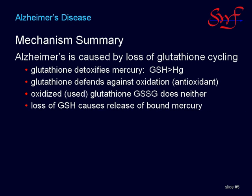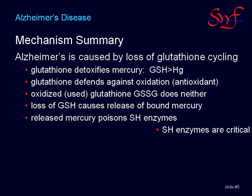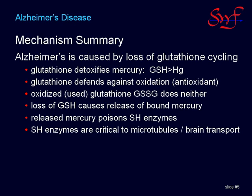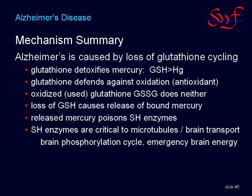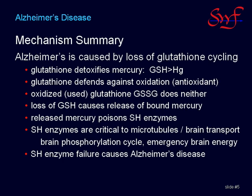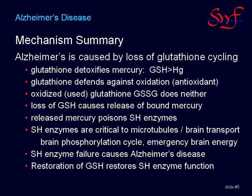Oxidation of glutathione causes release of bound mercury. Released mercury poisons sulfhydryl enzymes. Sulfhydryl enzymes are vital parts of several critical brain systems, including microtubule maintenance, the phosphorylation cycle, and the energy backup system. Sulfhydryl enzyme failure is a defining characteristic of Alzheimer's disease, and glutathione restoration reverses Alzheimer's disease.